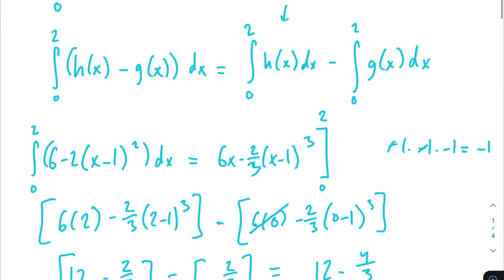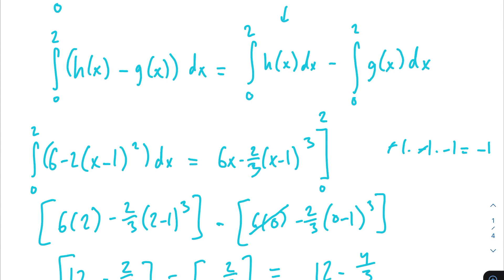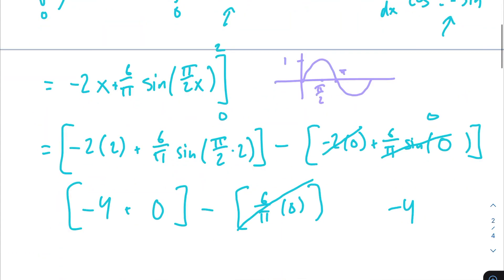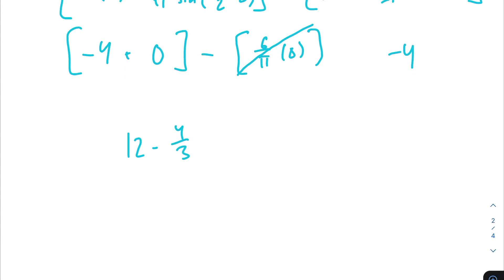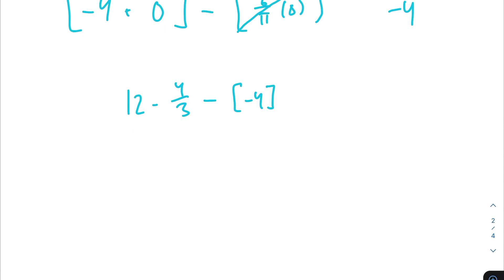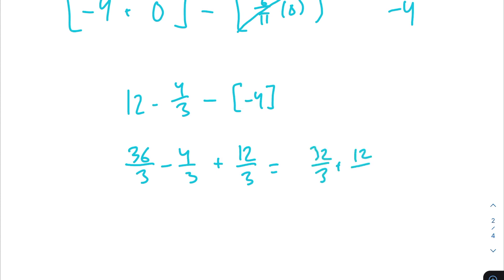Remember that we're subtracting the integral of g of x from the integral of h of x. We got 12 minus 4/3 for h of x, and we're subtracting negative 4. Putting everything over a denominator of 3: 36/3 minus 4/3 plus 12/3 = 44/3. That's our final answer for part A.